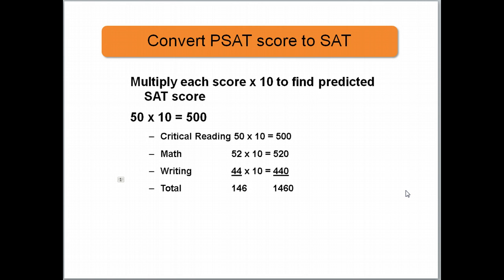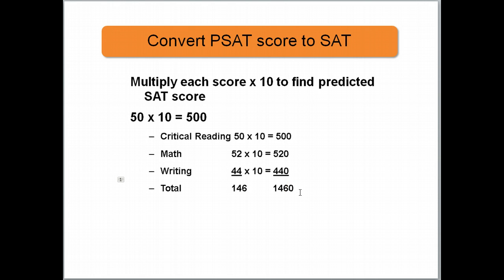To convert the PSAT to an SAT, simply add a zero to each section — multiply by 10. My scores: 50 in reading, 52 in math, 44 in writing. My 50 becomes 500, my 52 becomes 520, my 44 becomes 440. I total them and my converted or predicted SAT score is 1460. When students talk about their SAT scores and say they had a 1500 or 2100, they're talking about all three parts of the test combined.